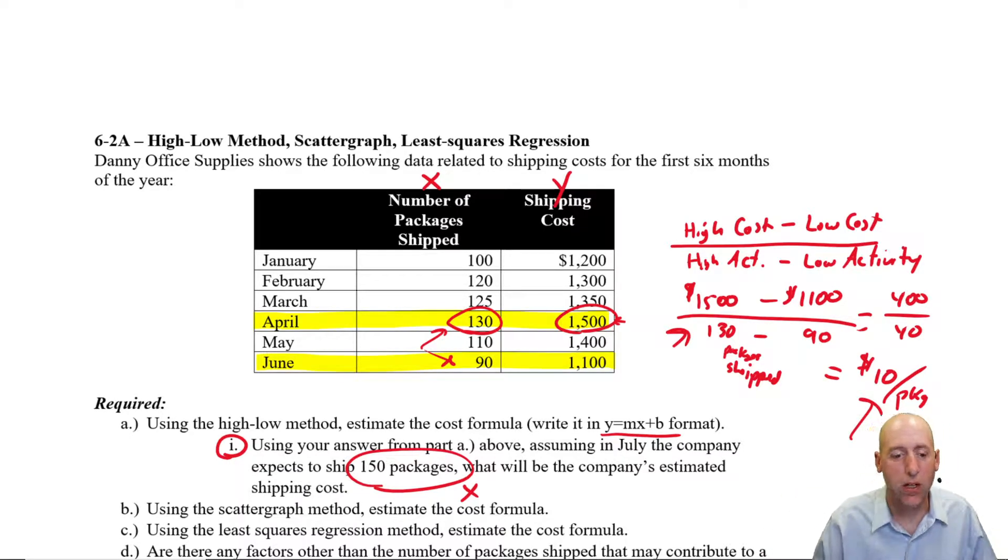We are continuing our journey through problem 628. We've just done the high-low method. We're going to use that same data set and do the scatter graph method. With the high-low method, we highlighted two points and based on those two points of data, let's estimate our cost formula for our line. The scatter graph method, we actually use more data to estimate our cost formula.